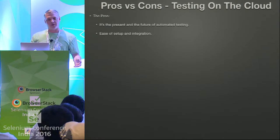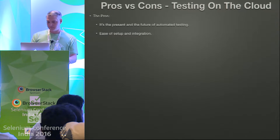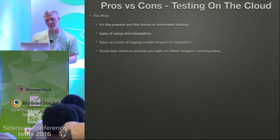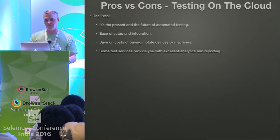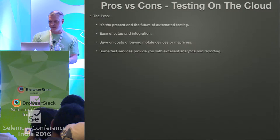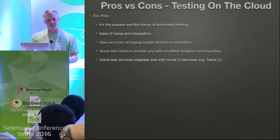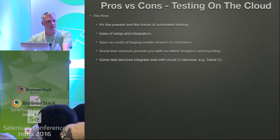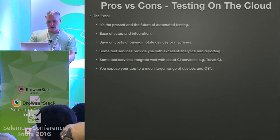The pros include ease of setup and integration — it's all done for you, all you have to do is send your tests to these services. You don't have to buy all the machines and all the devices. Some services provide excellent analytics and reporting: CPU usage, memory usage, even screenshots of spikes. Some test servers integrate well with cloud CI services like Travis CI, so you could build locally, commit, it goes to Travis, and runs tests there. You also expose your app to a much larger range of devices and operating systems.